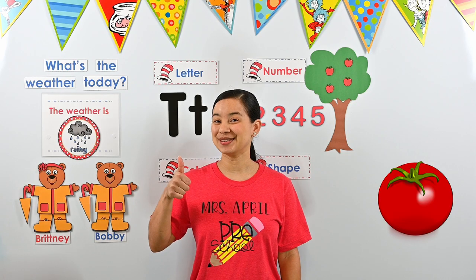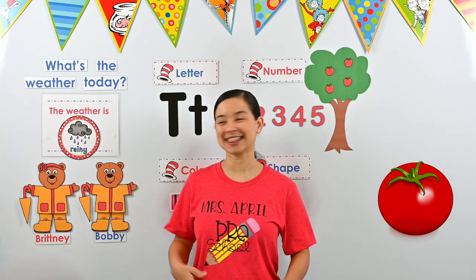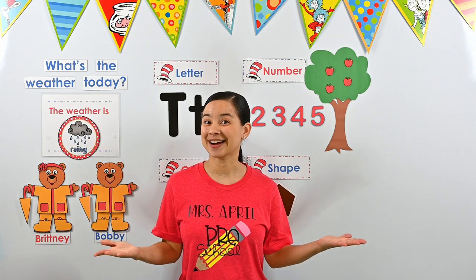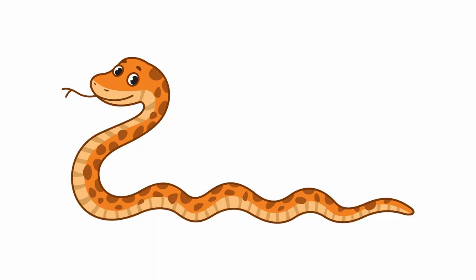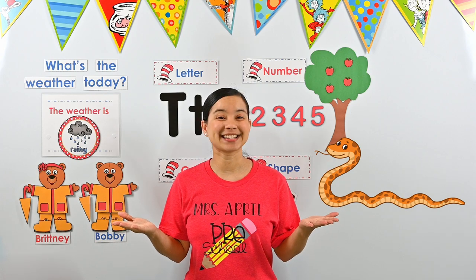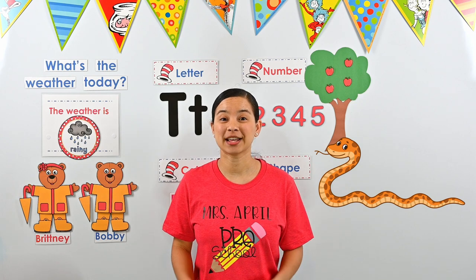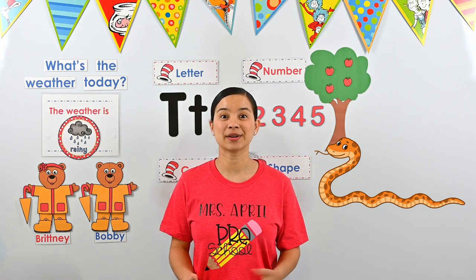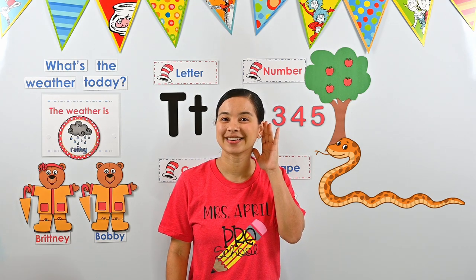Let's look at our first picture. It's a tomato. Does tomato start with the letter T? Do you hear the T sound at the beginning? Listen: tomato. If you have your thumb up, you are correct. Tomato has the T sound at the beginning. Great job! Let's try another one. Look, it's a snake. Does snake start with the letter T? Do you hear the T sound at the beginning? Listen: snake. If you have your thumb down, you are correct. Snake does not start with the letter T — I hear the S sound at the beginning.